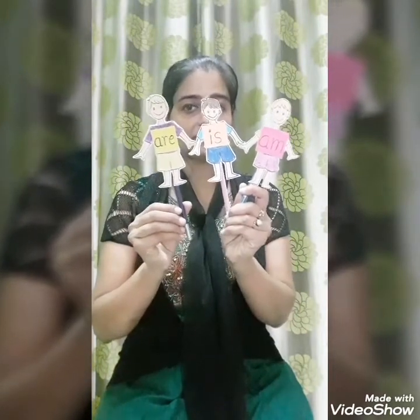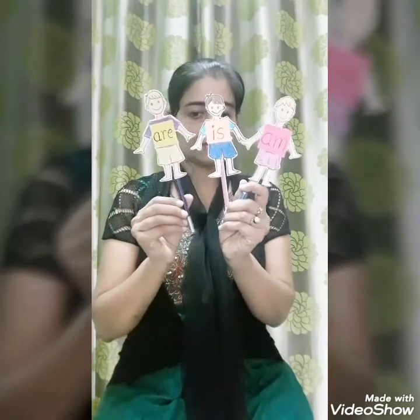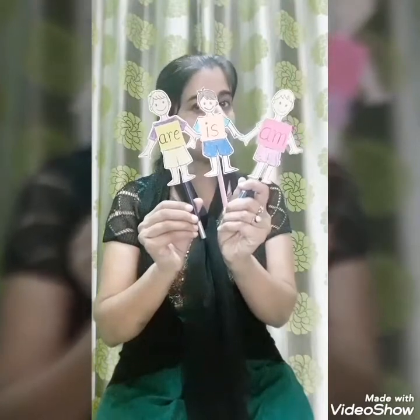Now once there were three best friends. Their names were am, is and are. But suddenly one day all the three started fighting. They were angry with one another. So the three went to the park to make new friends.